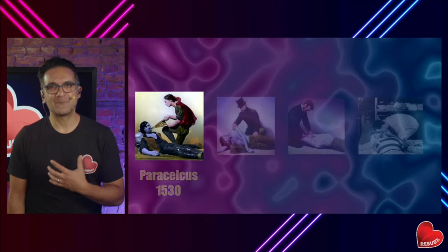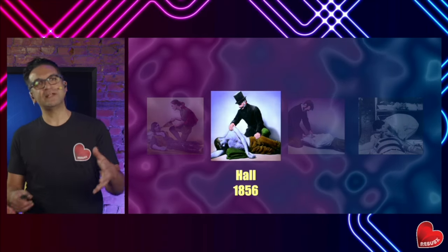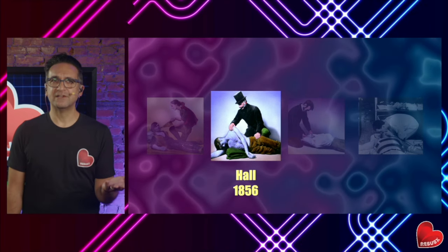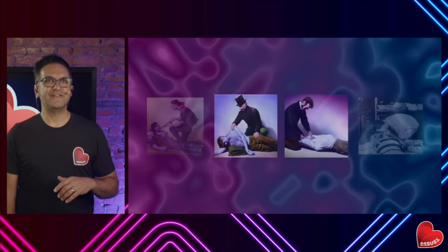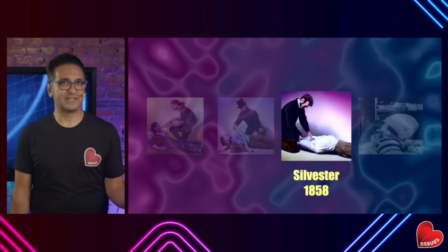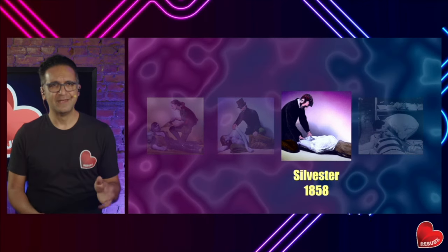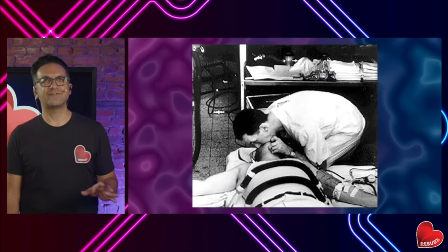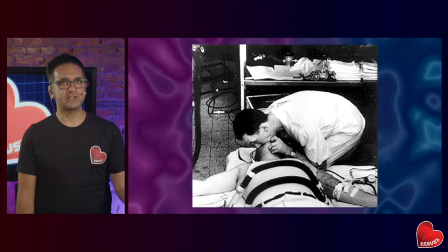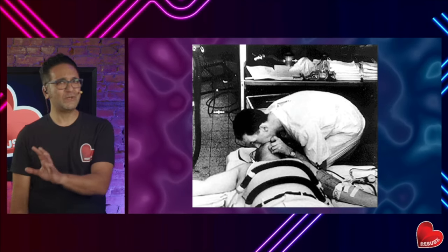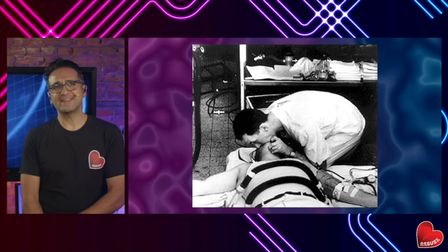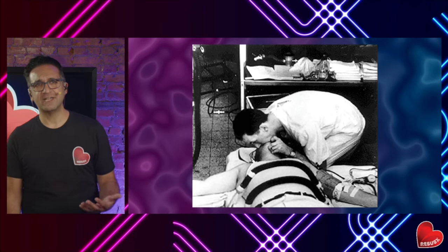Let's go back to the 1500s when Paracelsus was first doing resuscitation — people in cardiac arrest had a bellows stuck in their mouth for ventilation. In the 1800s in London, Hall introduced turning patients on their sides and pushing on their thorax, perhaps the earliest cardiac compressions. A couple of years later Sylvester modified this by laying patients flat and moving their arms. It wasn't until the 1960s that Dr. Safar and colleagues introduced closed chest compressions and mouth-to-mouth resuscitation.